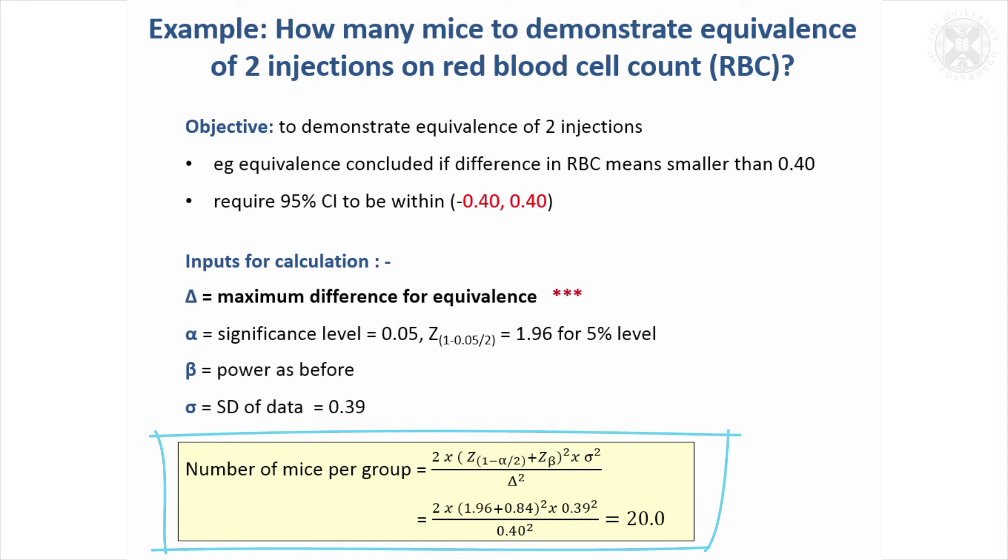So the calculation is exactly the same. And we come out, if we're looking at 0.4, then we need 20 mice per group, which is exactly the same as if we were looking for a difference of 0.4. So with 20 mice per group, we can be 80% certain. We've got a power of 80% of showing that the 95% confidence interval for the difference between the treatments is going to be within minus 0.4 and 0.4. When we're in that situation, we'll be able to conclude that the two injections were equivalent.